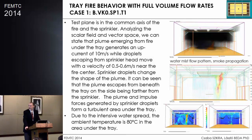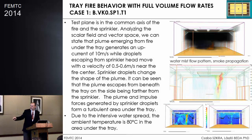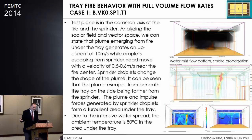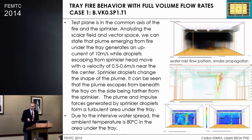In the next set of cases, we introduced a fire — a t-squared fire around 1 megawatt. Based on that, a plume develops. Here is the fire source, and the plume comes up the other side of the shelf element where the sprinkler is. It's quite interesting that the plume is affected by the sprinkler. The plume velocity is around 10 meters per second, and around the shelf the sprinkler velocity is about 0.5 to 0.6 meters per second. The temperature on the tray, due to the cooling effect, was around 80 degrees Celsius.